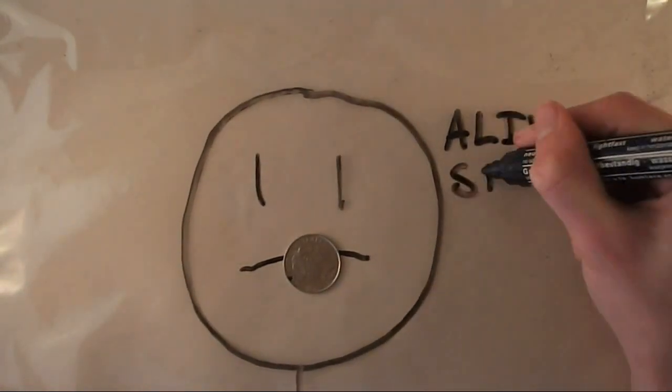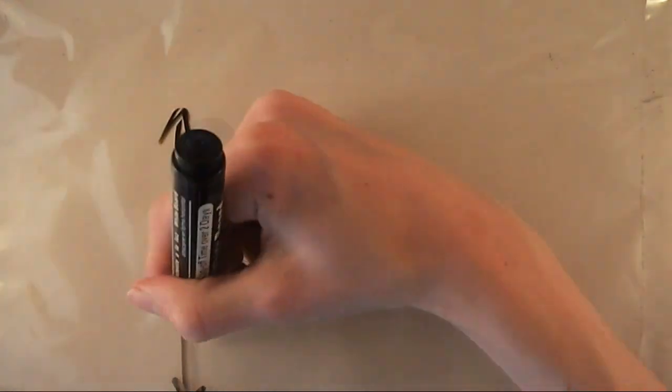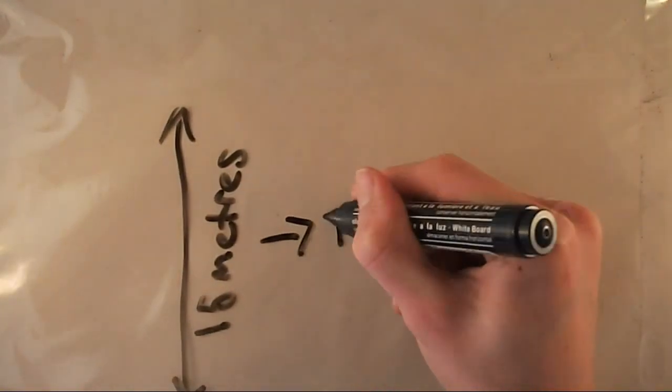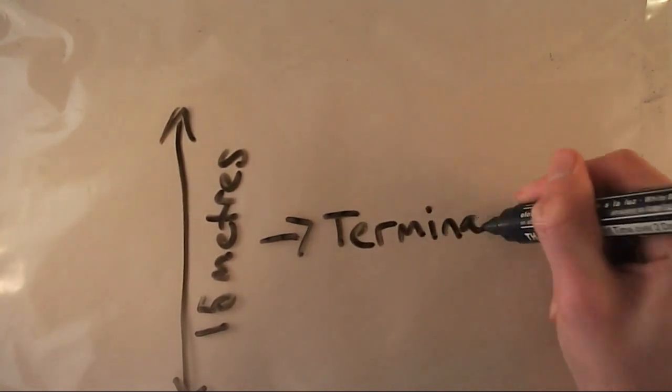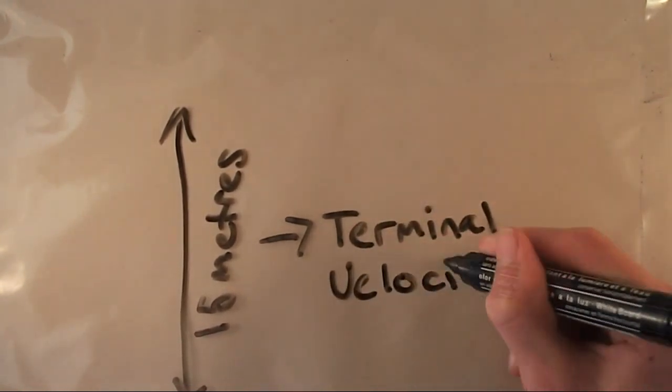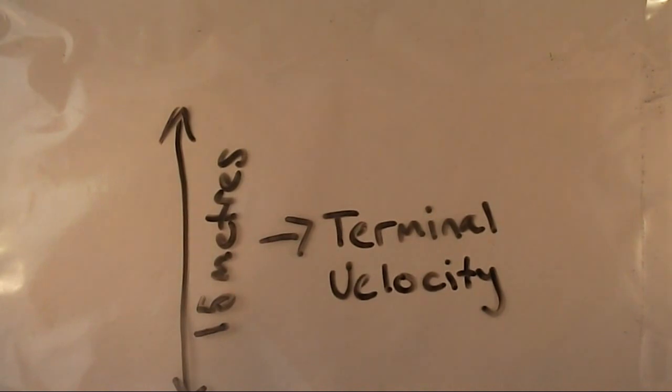Fortunately, a flick on the forehead isn't going to kill us. You can make a penny hit terminal velocity quite easily. Once a penny has dropped 15 meters, it has hit terminal velocity, when it will no longer accelerate due to the sum of the buoyancy and drag force equaling gravity.